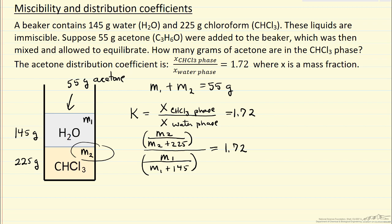So essentially we have two equations. M1 plus M2 equals 55, and then this relation between M1 and M2 from the distribution coefficient. Two equations, two unknowns, essentially reduces to a quadratic equation that I can solve.